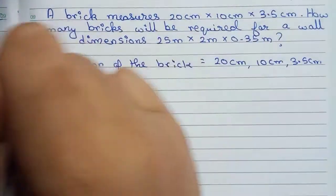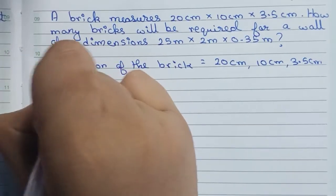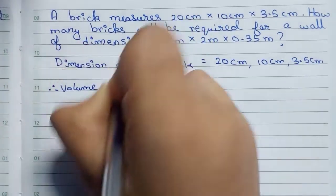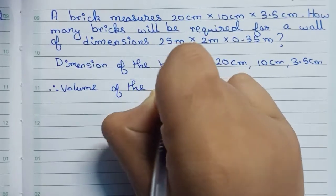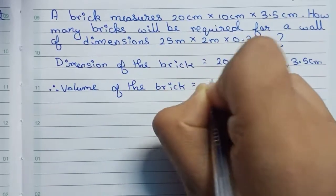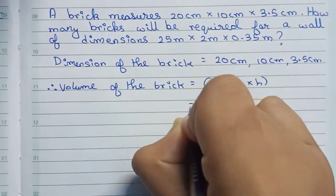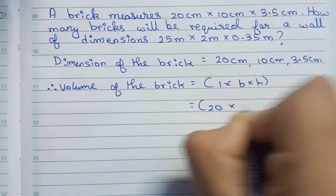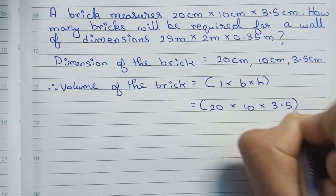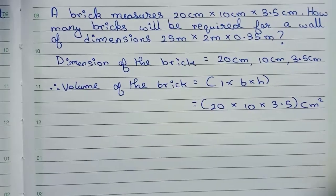Now I find the volume of it. Volume of brick equals to length × breadth × height, which will be 20 × 10 × 3.5 cm³. So this will be the volume of the brick.